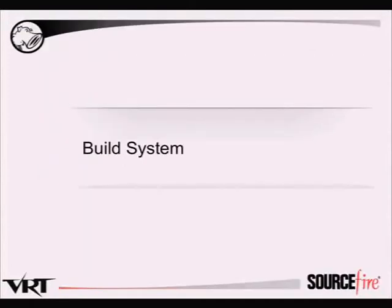Now for how you would build an appliance. We didn't want to use NanoBSD because we wanted people to be able to run freebsd-update within the appliance, install a ports tree, install extra packages, and write scripts — so we didn't want the restriction of a NanoBSD read-only system. We went with a traditional FreeBSD install.